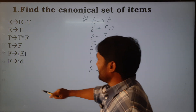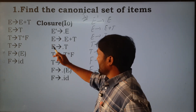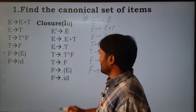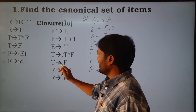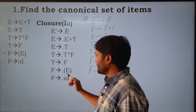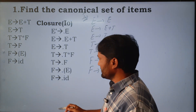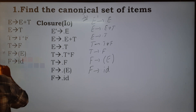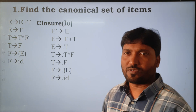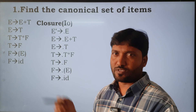So initially we add the augmented grammar for the given context-free grammar, and then if there is any non-terminal symbol after the dot, we need to add its productions by placing the dot on the right-hand side. This is how to calculate the closure function for I0. Then we apply the goto function for each and every symbol after the dot in closure of I0.